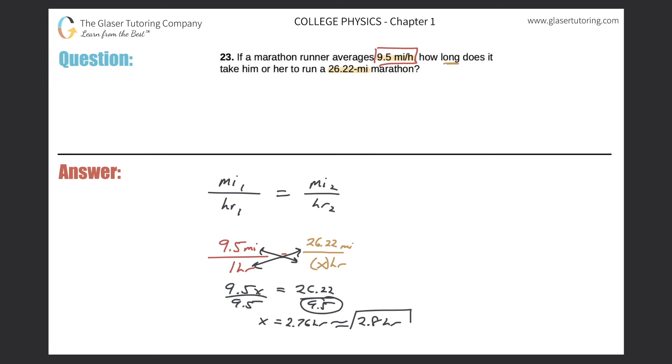2.8 hours, and that would then be the final answer. That does make sense because if it took this person one hour to run 9.5 miles, then it sounds like it might be a little shy of three hours to run about 26 miles. Okay, thanks for tuning in guys, until next time.